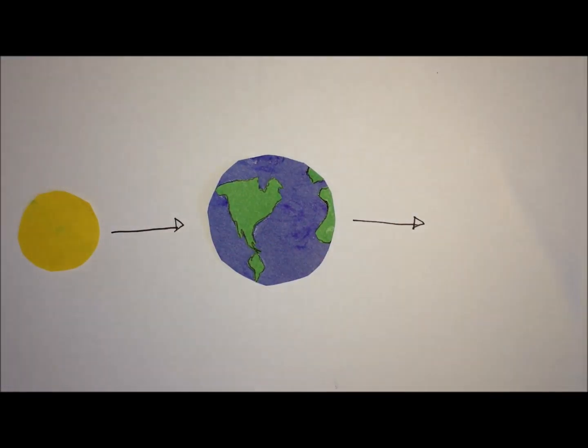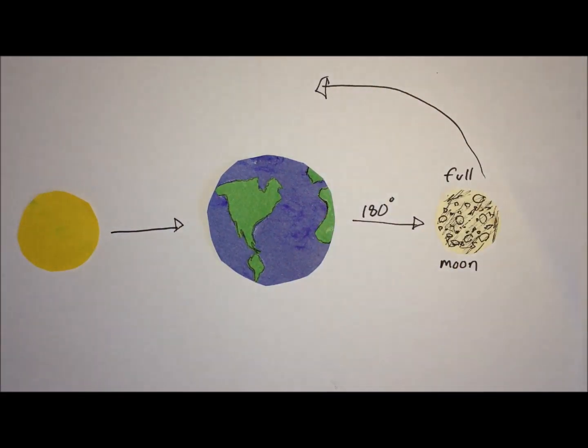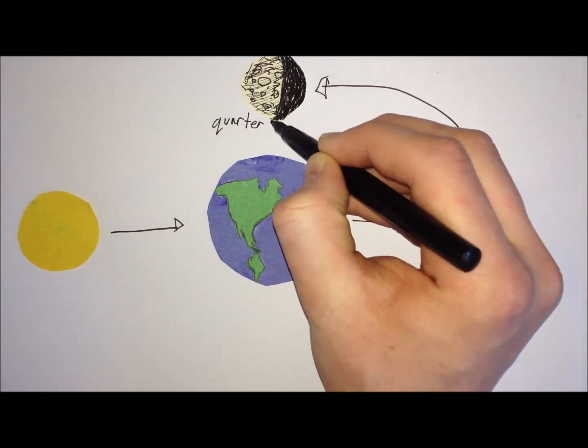However, there is one time in a lunar cycle that the moon and sun are opposite of each other. This is at a full moon, when they are 180 degrees away from each other. When the moon is 90 degrees away, you have your first quarter moon.